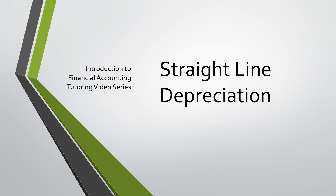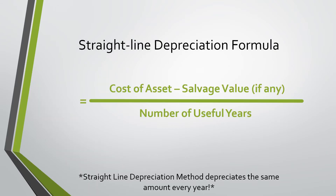Today we will be going over straight line depreciation. The straight line depreciation formula is the cost of the asset minus the salvage value, if there is any, divided by the number of useful years. Keep in mind that the straight line depreciation method depreciates the same amount each year.